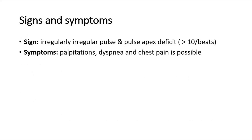Signs and symptoms of atrial fibrillation: signs include irregularly irregular pulse and pulse-apex deficit. Symptoms include palpitations, dyspnea, and possible chest pain.